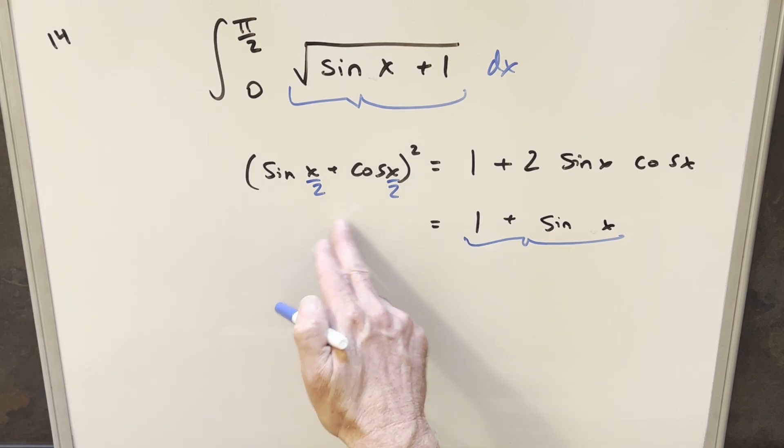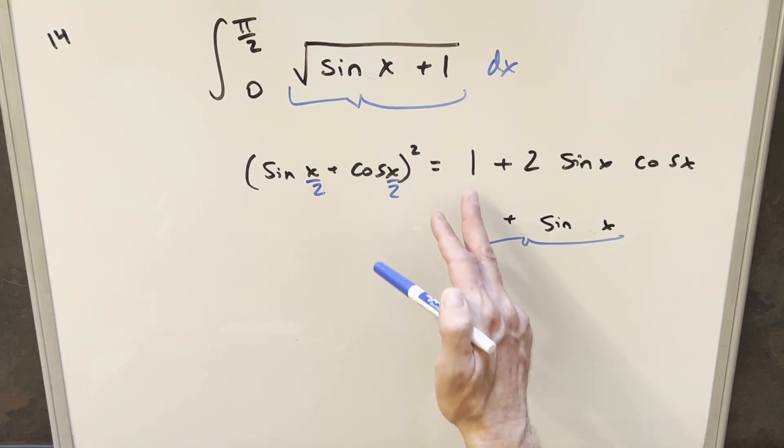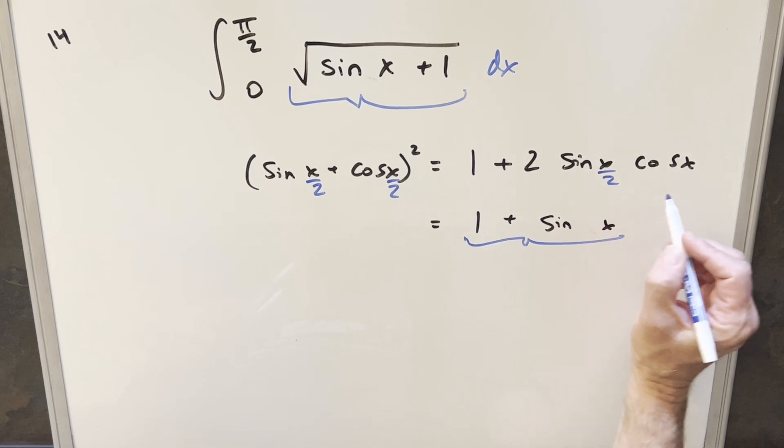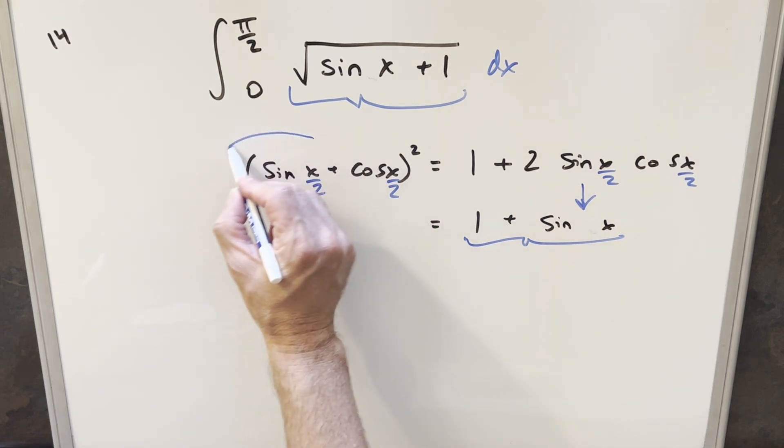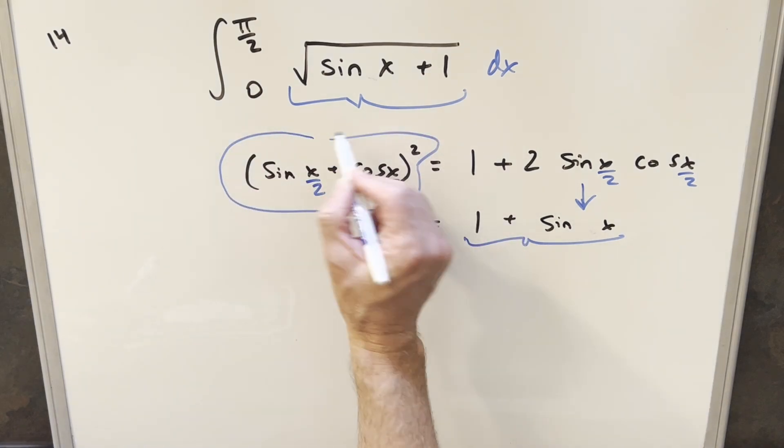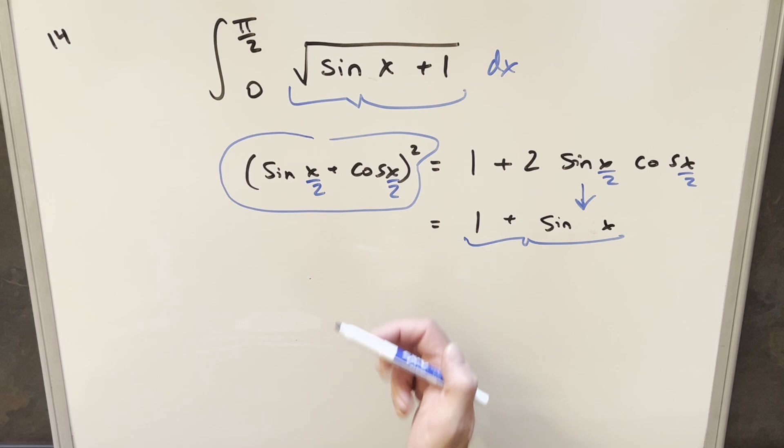then everything over here becomes half angles. Because if you multiply this out, sine squared plus cosine squared is still going to be 1 regardless of what the angle is. The middle terms become like this, but this right here is going to be the same thing as sine of x. So then what I can do is let's just take this right here and we can plug this into the square root.